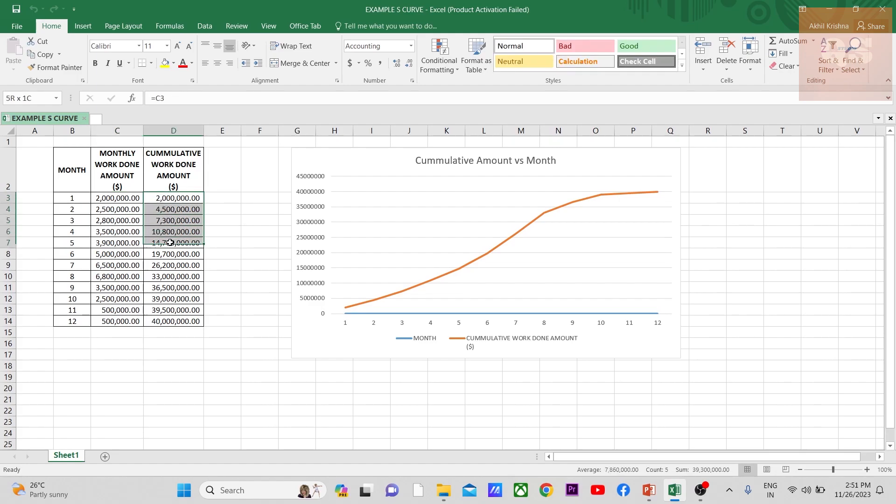In the third month, it will be 2 plus 2.5 plus 2.8, that is total till the third month. Like that it goes on. At the end of the 12th month it will be the completion of the project and the complete amount will be claimed.